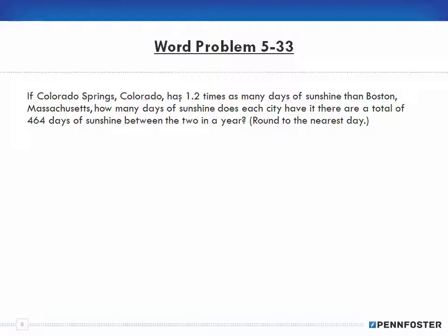If Colorado Springs, Colorado has 1.2 times as many days of sunshine as Boston, how many days of sunshine does each city have if there are a total of 464 days of sunshine between the two in a year? We're talking about Colorado plus Massachusetts being equal to 464 days in a year.